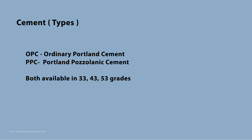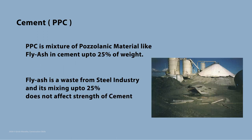Cement is mainly available in two types: Ordinary Portland Cement (OPC) and Portland Pozzolanic Cement (PPC). Ordinary Portland Cement contains only the basic ingredients of cement without any additions. PPC is one in which the costly clinker is replaced by certain pozzolanic material like fly ash, up to 25 percent by weight.